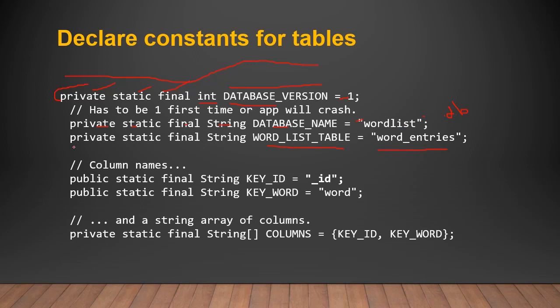The table name should also be private, static, final string. If you do not declare constants for your tables and do not use private, static, final — and only use string data type or integer data type for your table columns — your app will crash and will not work.